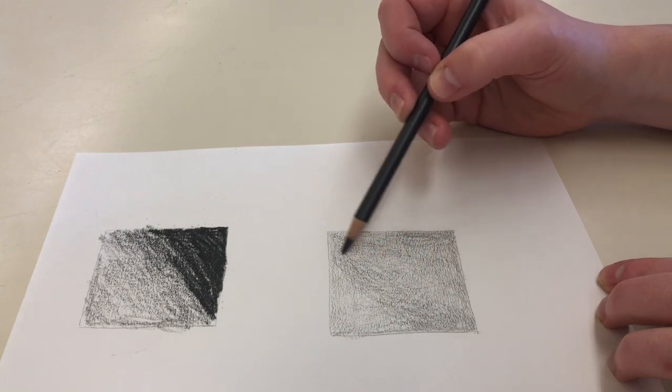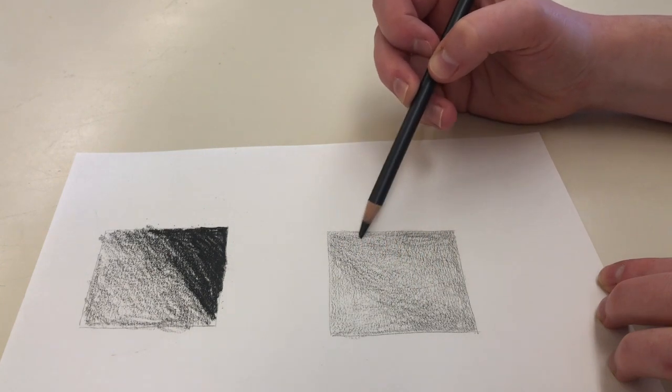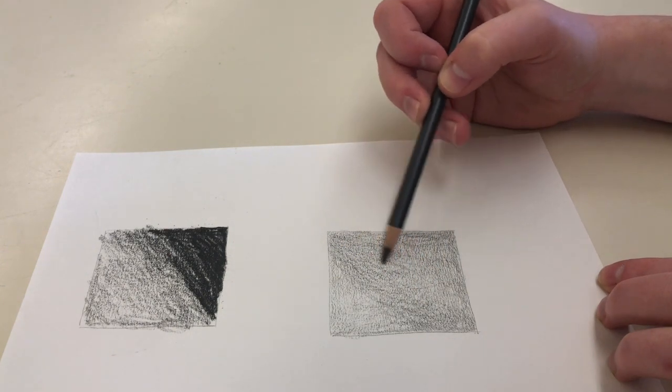As I add darker values you'll notice that my hand gets closer to the tip of the pencil which allows me to put more pressure on the pencil.